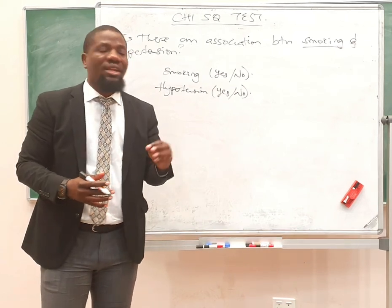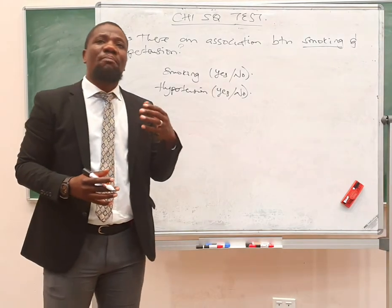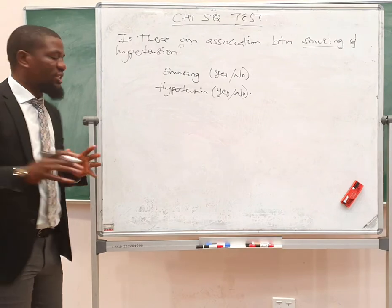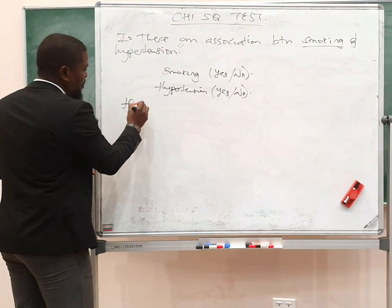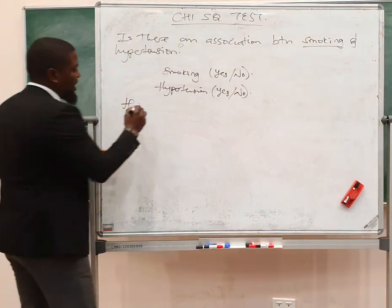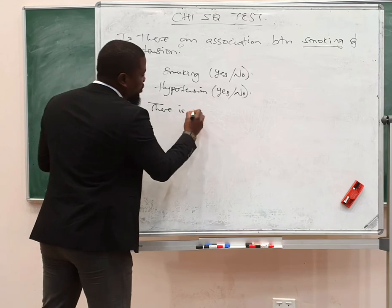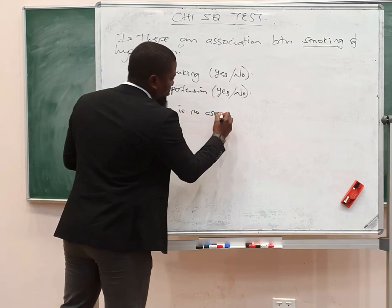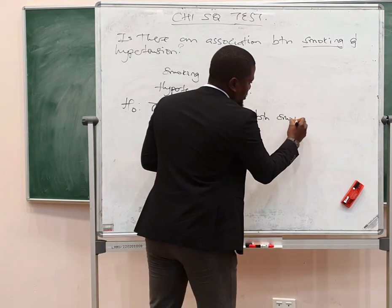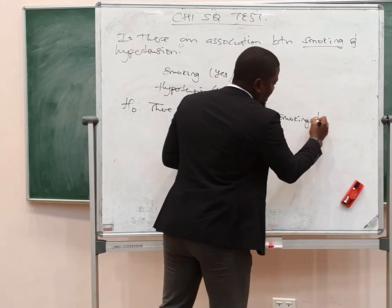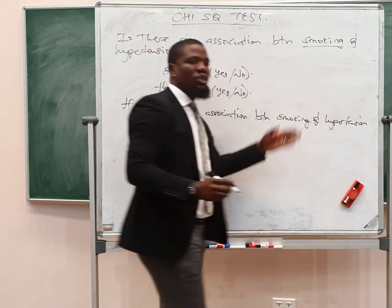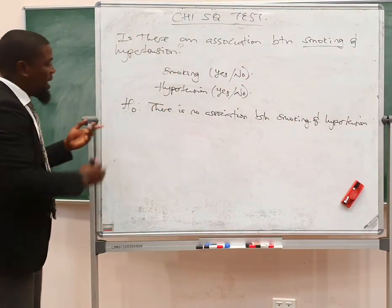You would hear the chi-square test being referred to as a test of no association. It is a test of no association in that it has a null hypothesis which states that there is no association. So the null hypothesis is actually going to state that there is no association between smoking and hypertension.